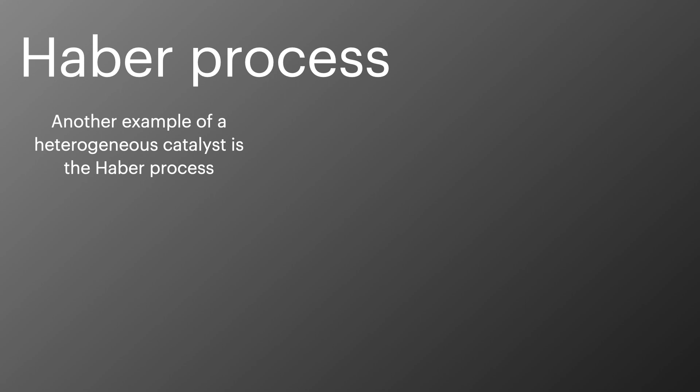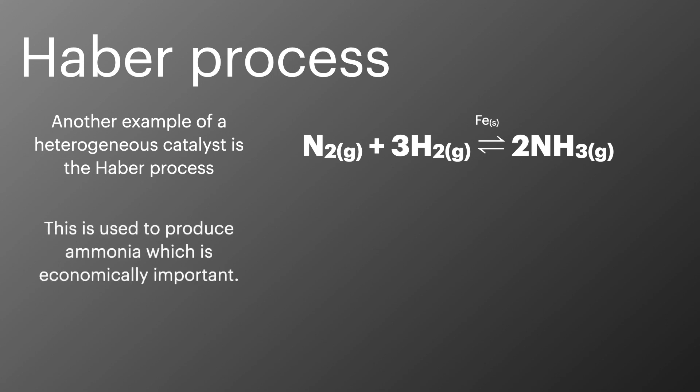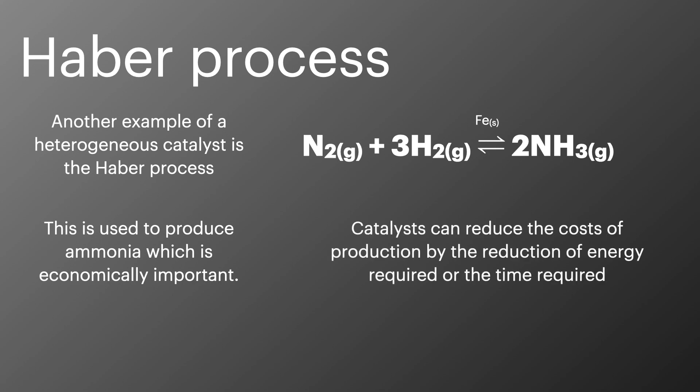The harbour process is another example of a heterogeneous catalyst. This time nitrogen gas reacts with hydrogen gas in the presence of a solid iron catalyst to form NH3. This produces ammonia which is economically very important. The catalyst reduces the cost of production by limiting the energy required and the time taken to produce the product.